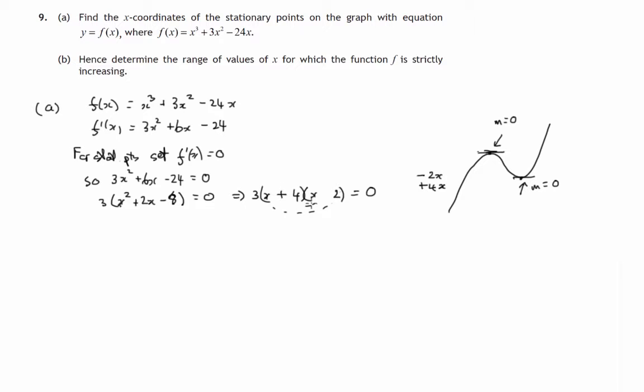Plus the 4x minus the 2x. And just check the last. Positive 4 times negative 2 does give us negative 8. Everything seems to be in order. Always check your factorizations by multiplying them out to see that you do get what you've just factorized.